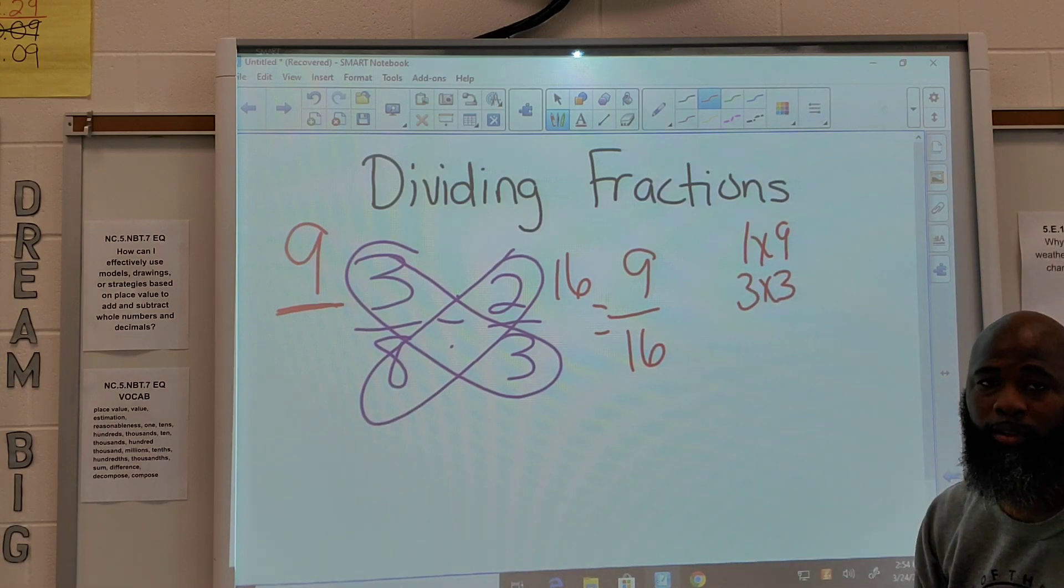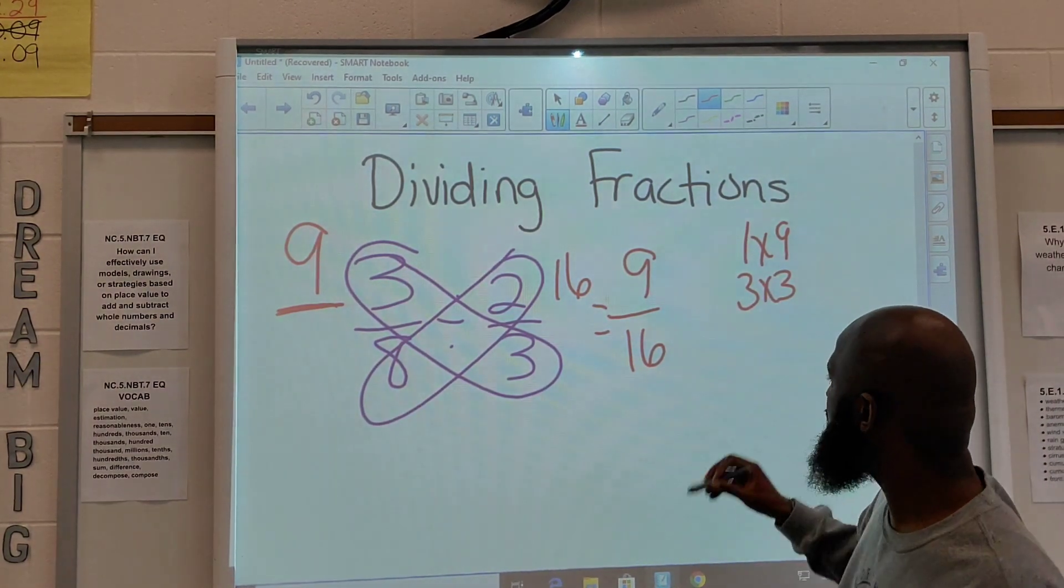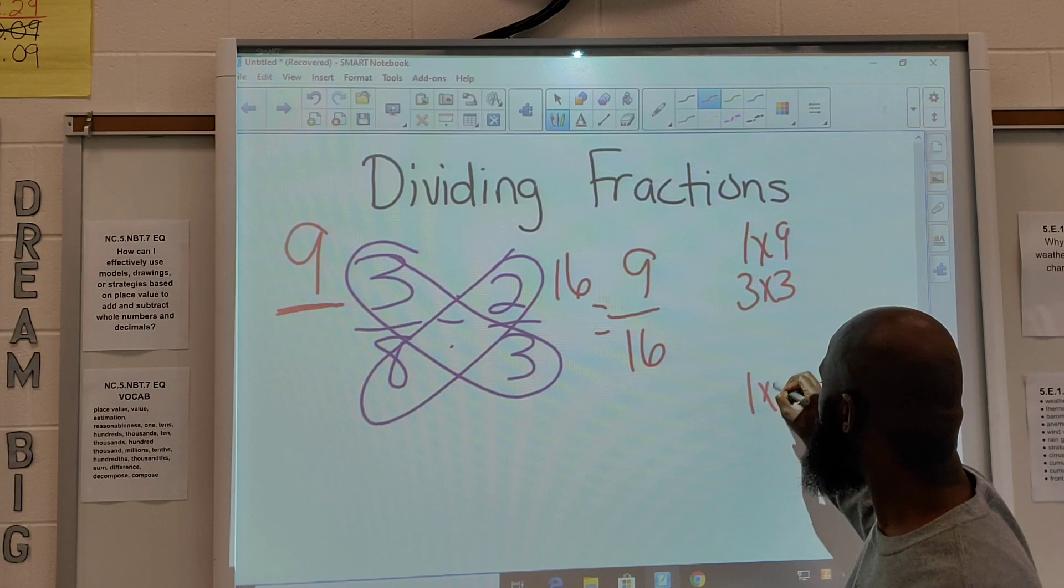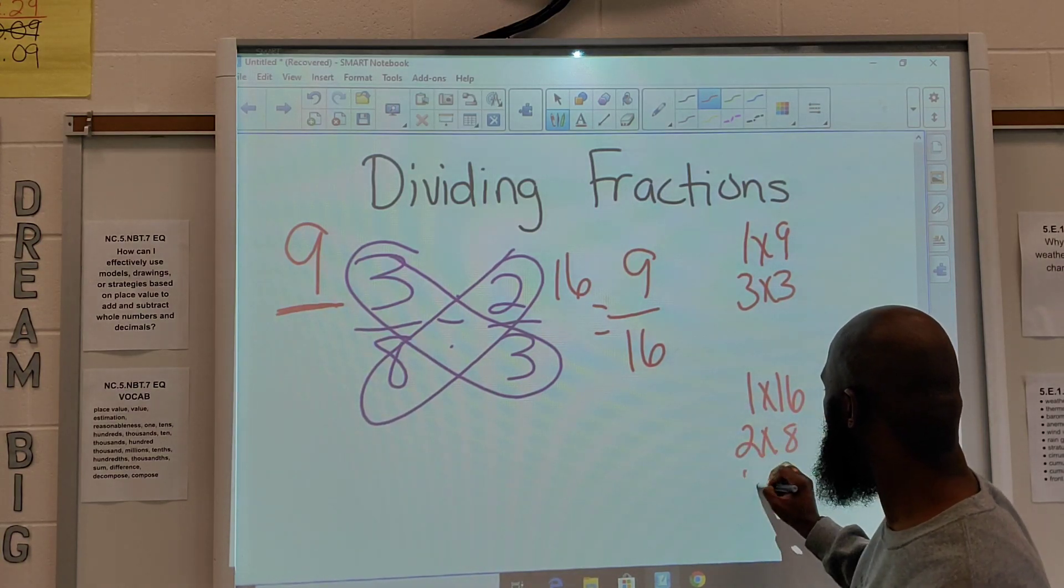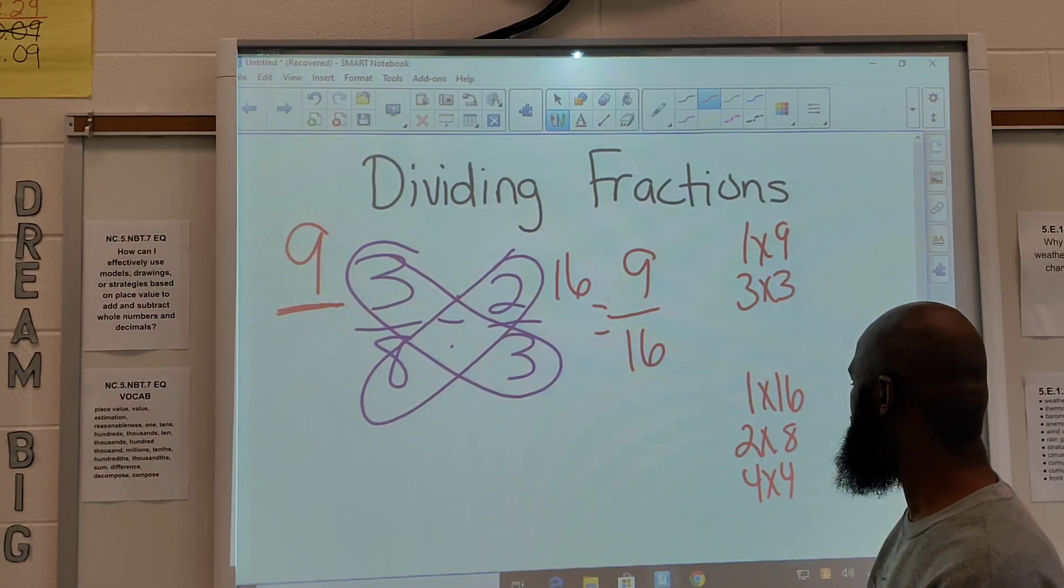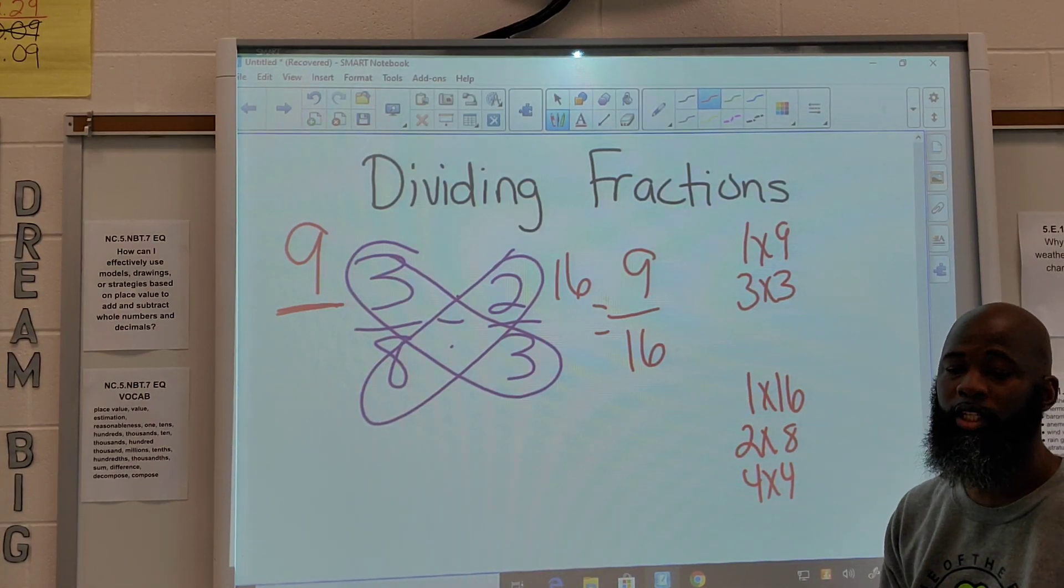Those are the factors of 9. For 16, we have 1 times 16, 2 times 8, and 4 times 4. And those are your factors for 16.